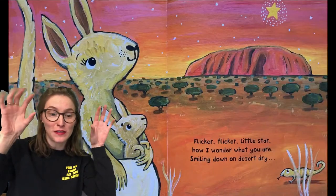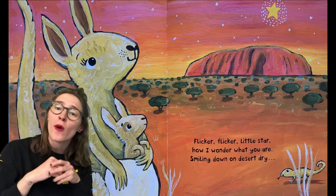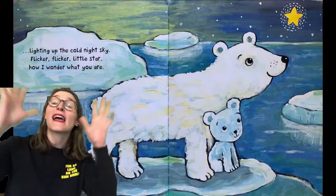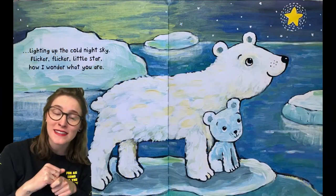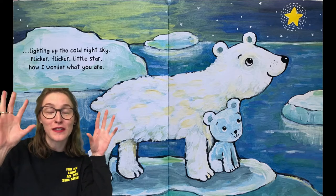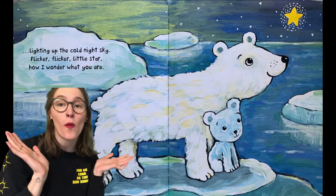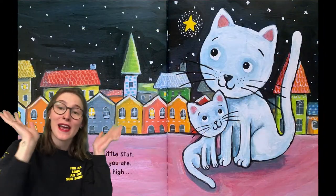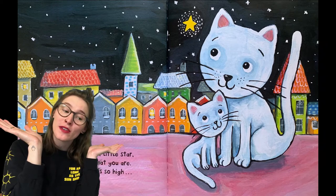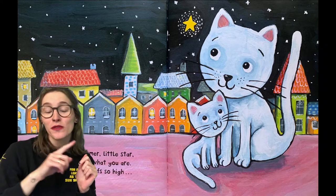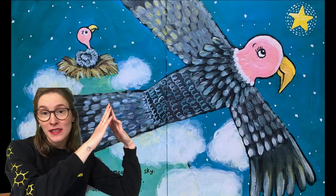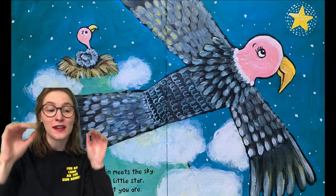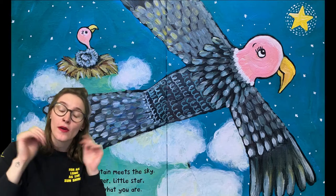Flicker Flicker Little Star, how I wonder what you are. Shimmer Shimmer Little Star, how I wonder what you are. Over zig-zag roof so high, where the mountain meets the sky. Shimmer, shimmer, little star, how I wonder what you are.